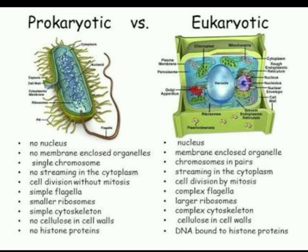In prokaryotic cell it is not highly specialized — it has simple flagella, smaller ribosomes, simple cytoskeleton, no cellulose in cell wall, and no histone protein. Whereas in eukaryotic cell it is highly specialized — it has larger ribosomes, complex cytoskeleton, cellulose in cell wall, and DNA bound to histone protein. The examples of prokaryotic cells are bacterial cells, and the examples of eukaryotic cells are animal and plant cells.